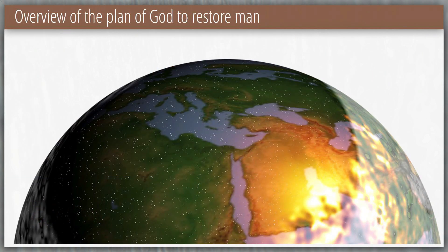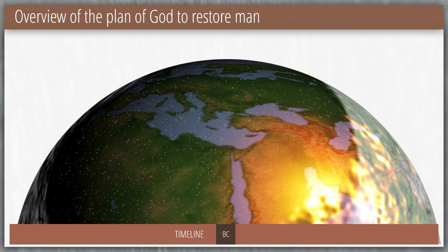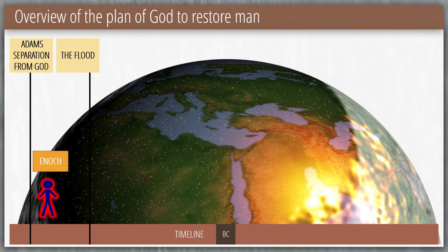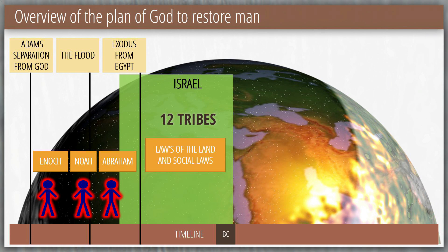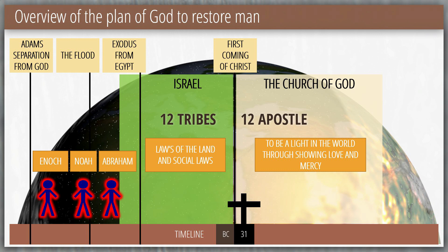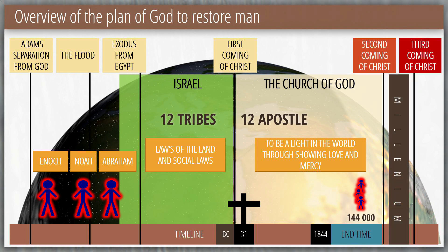Looking as an overview of the plan of salvation, it's 6,000 years that took from the Adam separation from God, over the flood, then Abraham, then the exodus from Egypt, then the first coming of Christ, his death on the cross, the 12 apostles who were called in the church to be the light of the world, to show his love and mercy. And then the end time in which God has to reveal the sons of God, and then comes the second coming of Christ, and comes the millennium, and in the third coming of Christ, with the judgment.